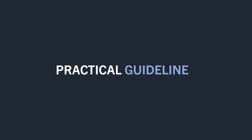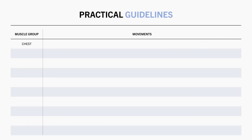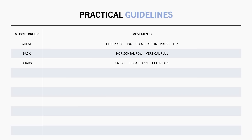Based on the factors discussed, let's now establish some practical guidelines for each muscle group. For the chest, we should include a flat, incline, and fly variation to maximize development. A decline variation may also be beneficial, but the lower chest fibres will usually be trained sufficiently via flat pressing exercises. As a minimum, we at least want to include a horizontal and vertical pull for the back. It may also be additionally beneficial to hit the back from various other angles. For the quads, we want to implement a squat pattern and an isolated knee extension movement. For the hamstrings, we want to include both a hip hinge and an isolated leg curl. For the glutes, some sort of hip thrust or bridge, a squat pattern, and a hip hinge pattern are recommended.